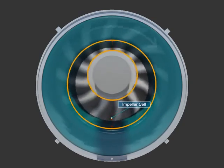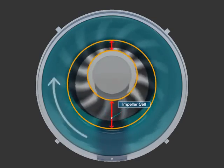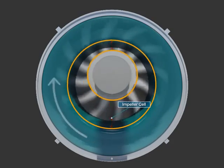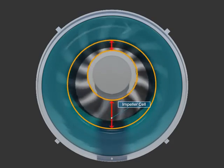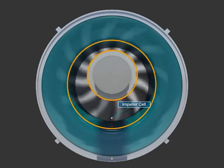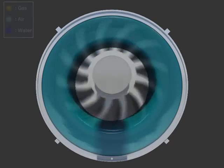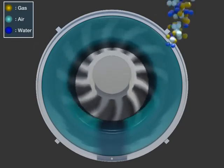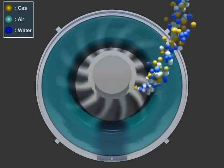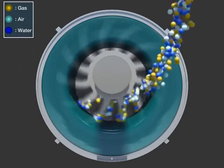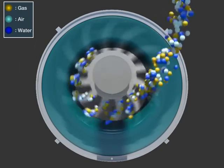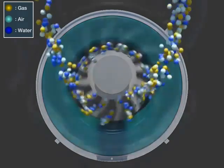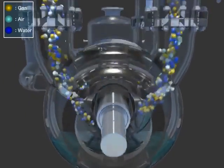The liquid ring, caused by the circulation of the impeller, creates capacity differentiation between the impeller and the inner wall because the impeller is located at a biased position inside the casing. This lets air and gas from the system be suctioned inside by creating a vacuum through pressure reduction caused by the capacity increase of the impeller cell at the inlet port.